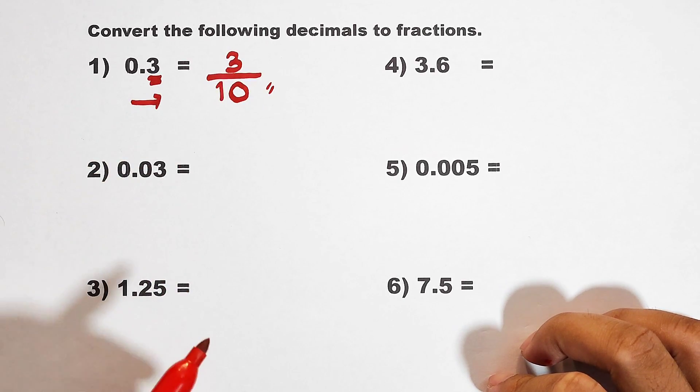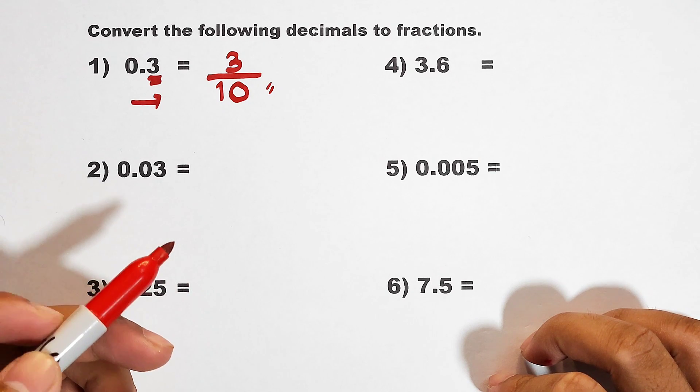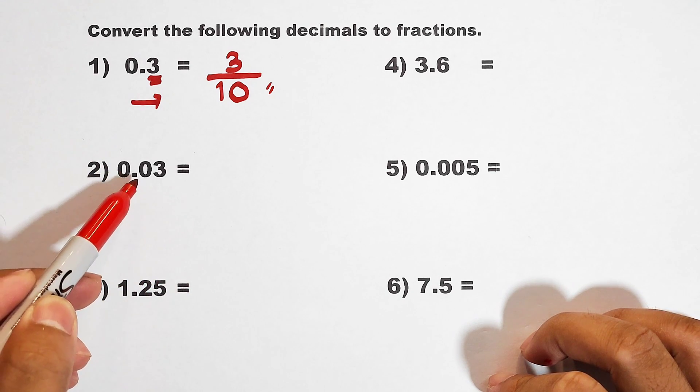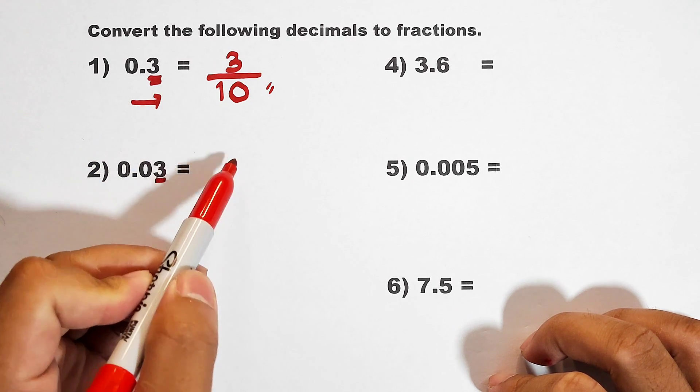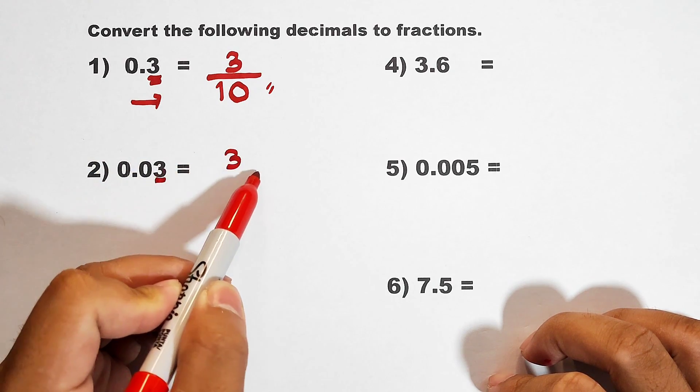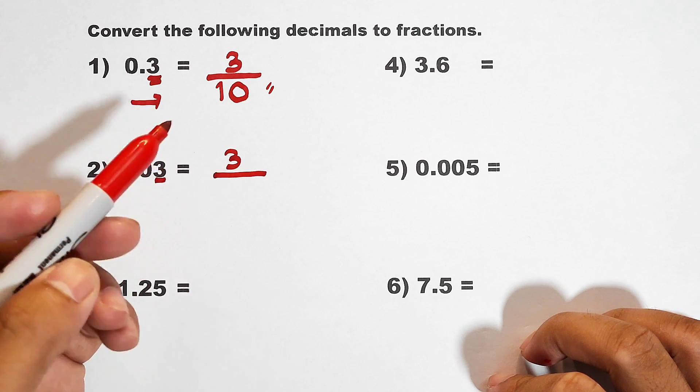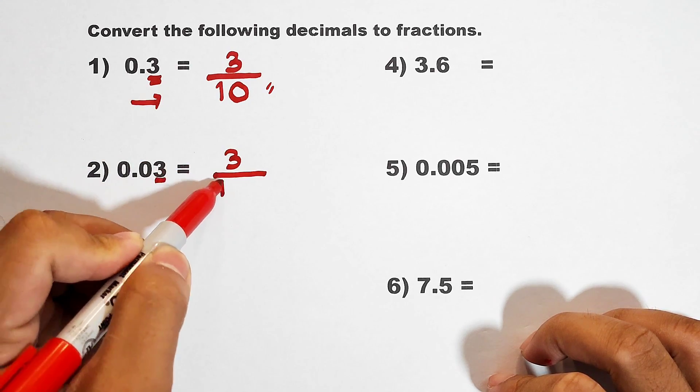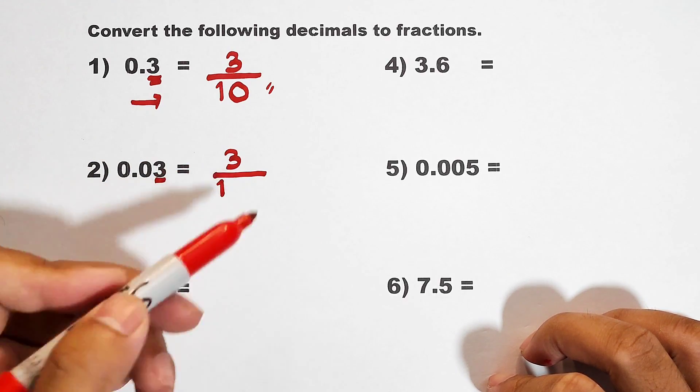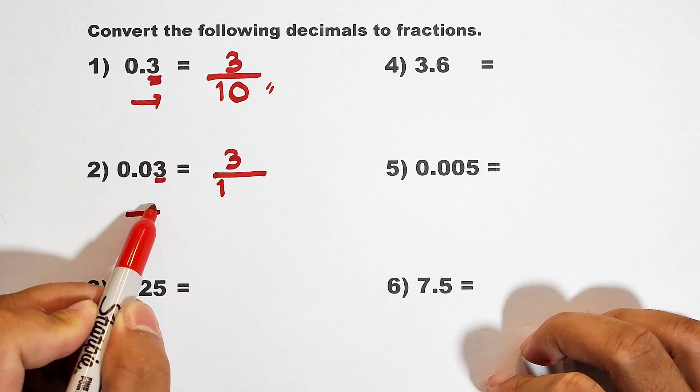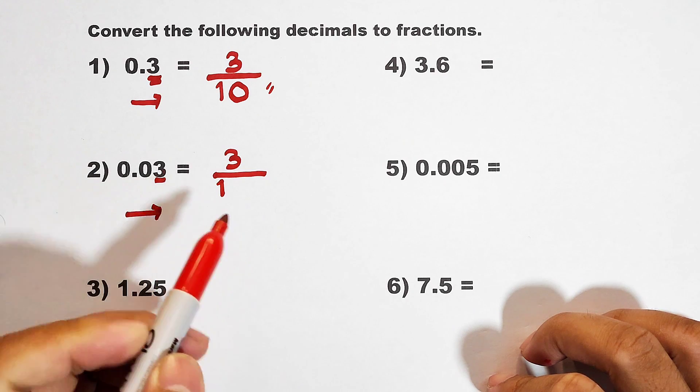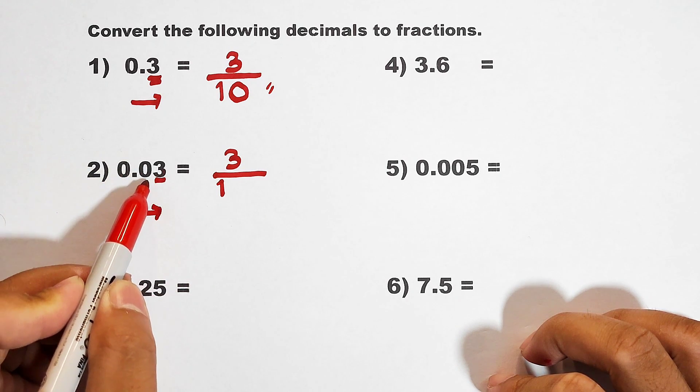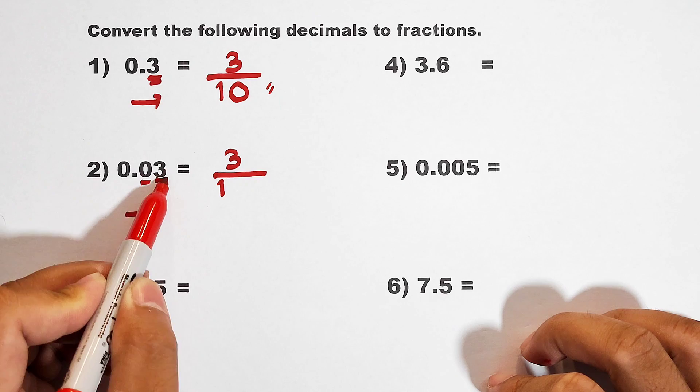Now let's move on with item number 2. For number 2, we are given 0.03. For number 3, get this number as your numerator over. For your denominator, put a 1 here. And then for the number of zeros, you will count the number of decimal places from left to right. From this point, we have 1 and 2.